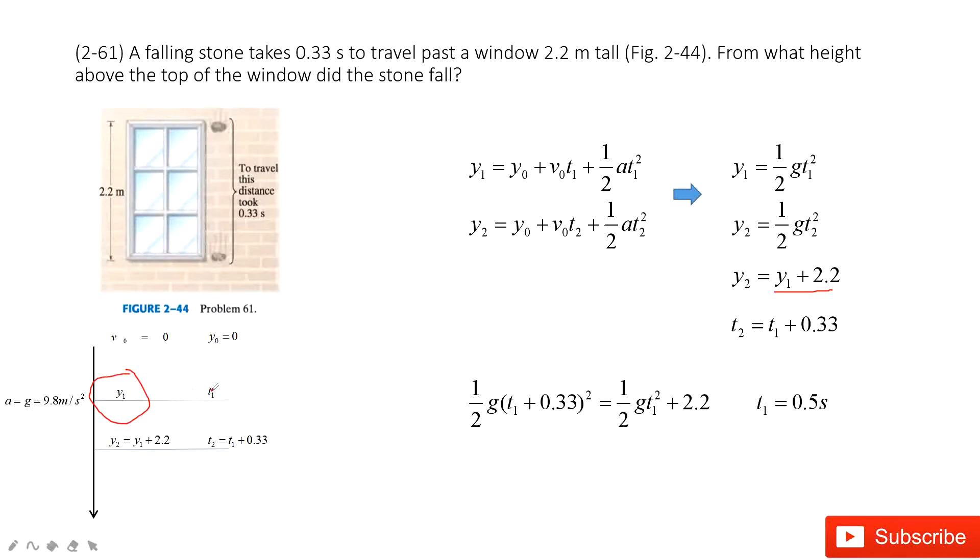So finding y1 becomes easy because we know initial position, initial velocity, and the acceleration. y1 is one half g t1 squared. We put the known numbers inside. We get it is 1.3 meters.